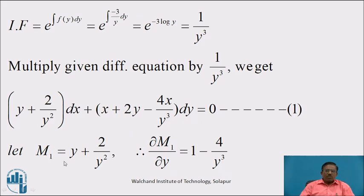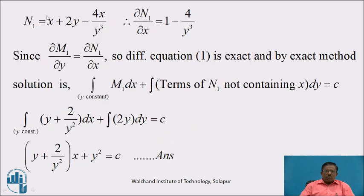Let M1 = y + 2/y². Therefore ∂M1/∂y = 1 - 4/y³. And N1 = x + 2y - 4x/y³. Therefore ∂N1/∂x = 1 - 4/y³. Since ∂M1/∂y = ∂N1/∂x, therefore differential equation (1) is exact.